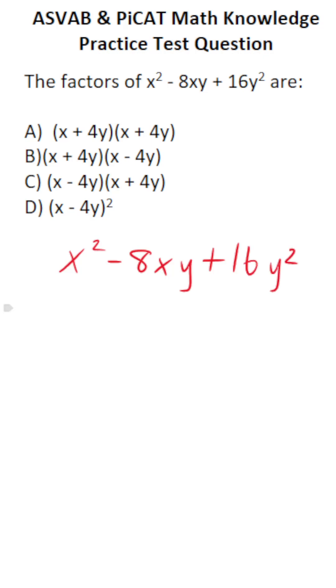If we can factor this one, it should look like this: x times x in parentheses. Again, x times x will give us our x squared. Now we're looking for two terms that when we multiply them together will give us positive 16y squared, but when we multiply this whole thing out, we'll give us negative 8xy.